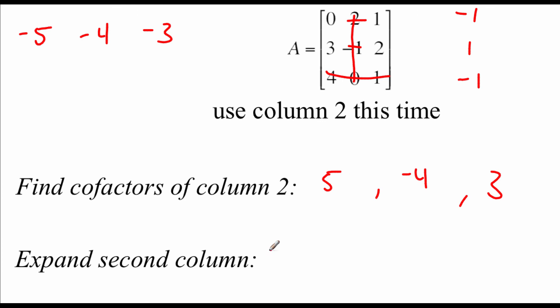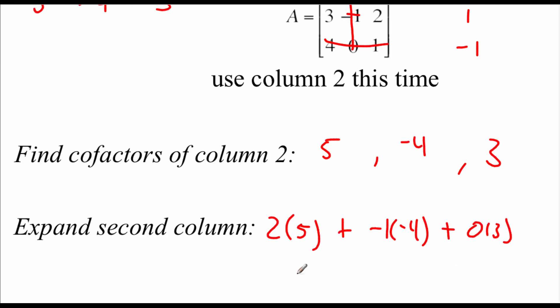So to figure out the determinant, we're going to take 2 times its 5 cofactor plus negative 1 times its negative 4 cofactor plus 0 times 3. So 2 times 5 is 10, plus 4 plus 0, we get 14 as our determinant, and that matches up with what we got before.